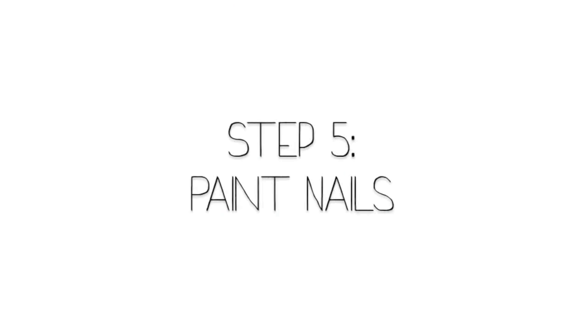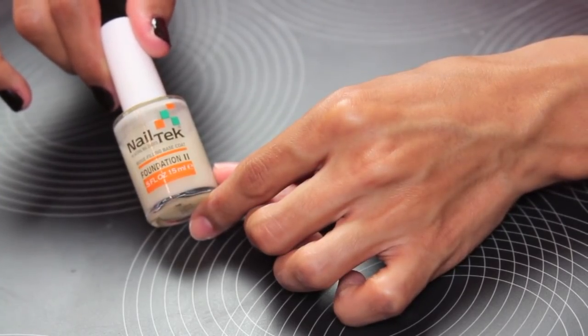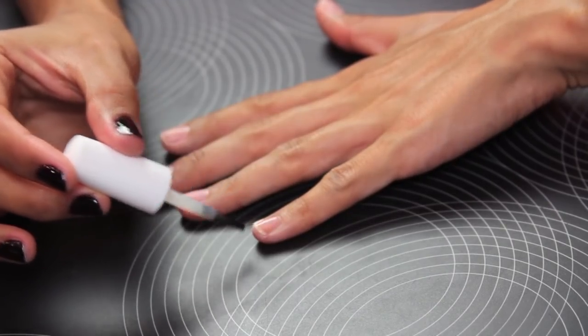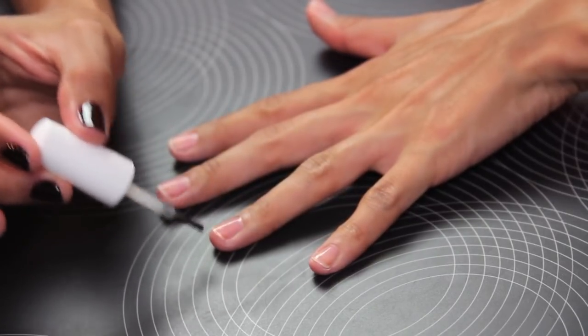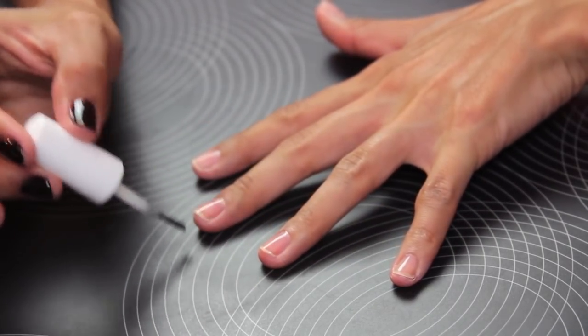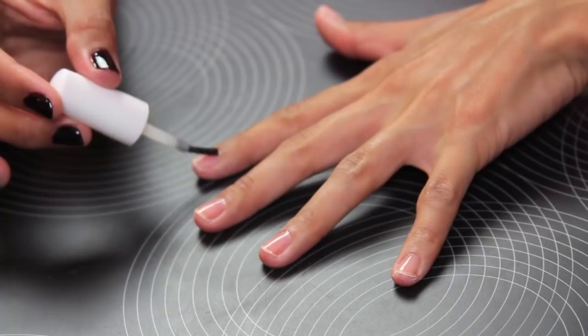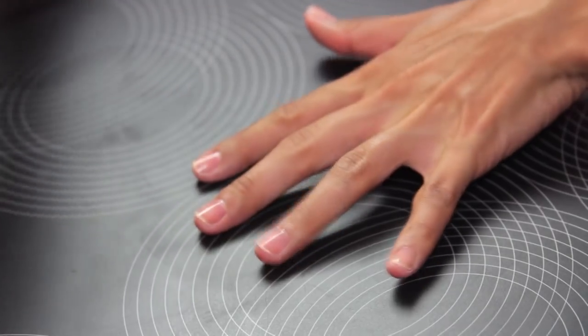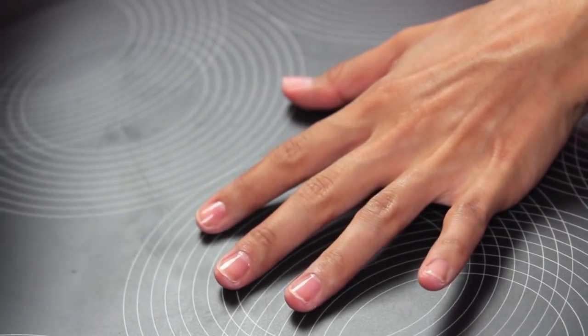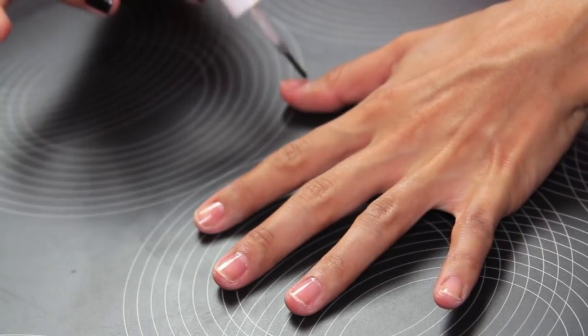So now step five is painting my nails. This is my favorite part. I'm going to begin by taking Nail Tek, and it's a formula that's great for fingernails that are really brittle or if you need to fill in any ridges, which is what I'm doing. So I have a nice, even base layer for my nail polish to go on very smoothly.